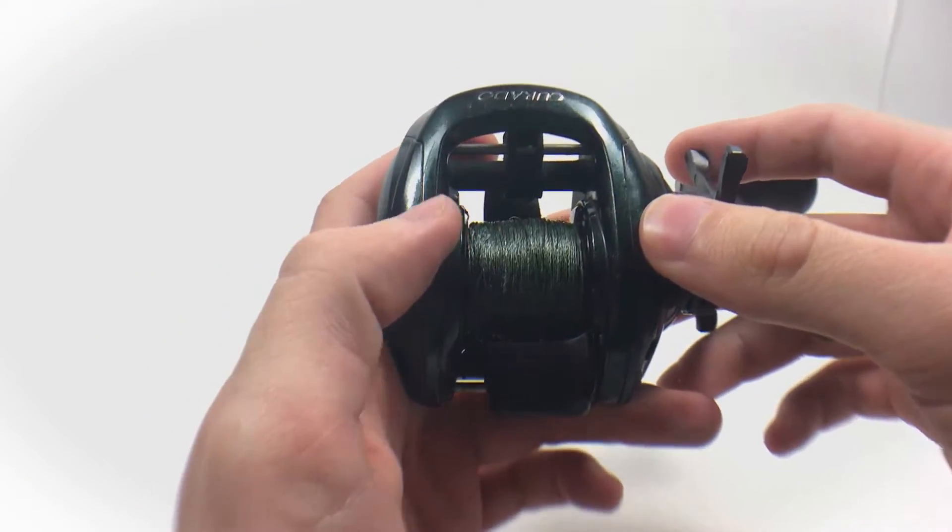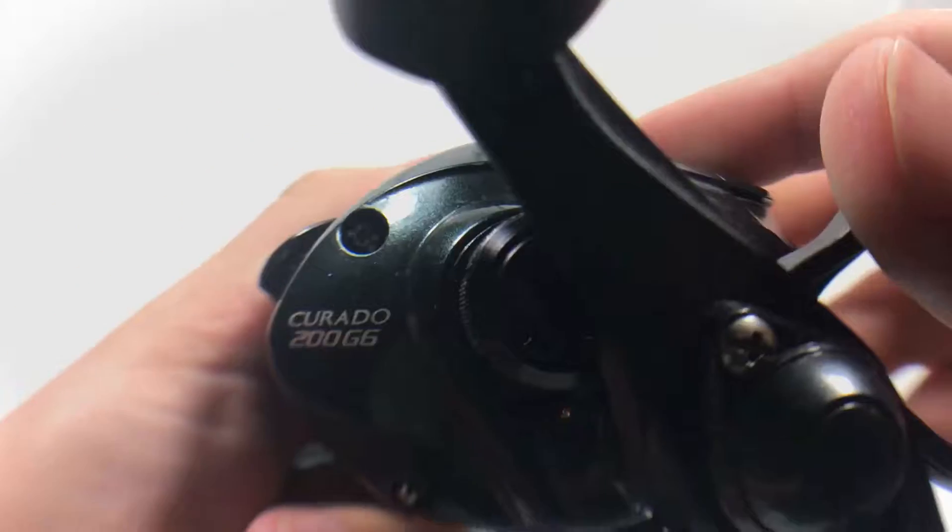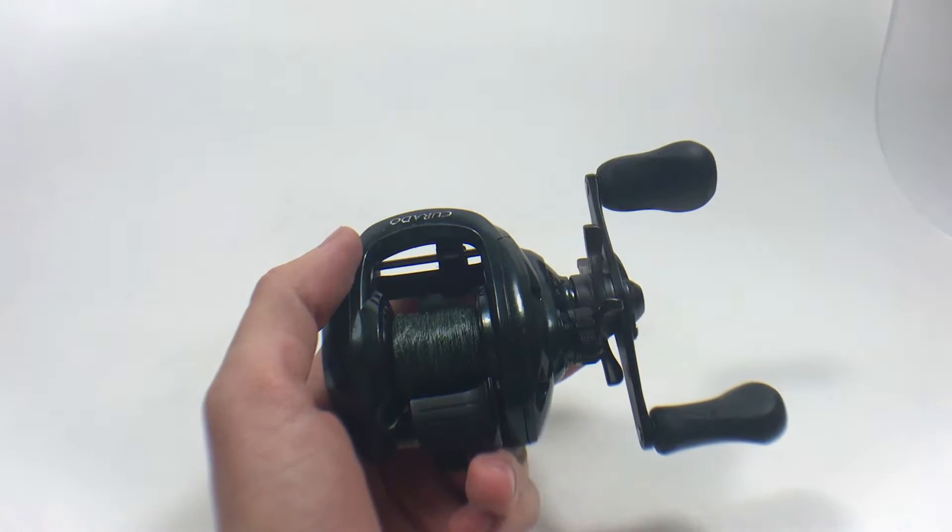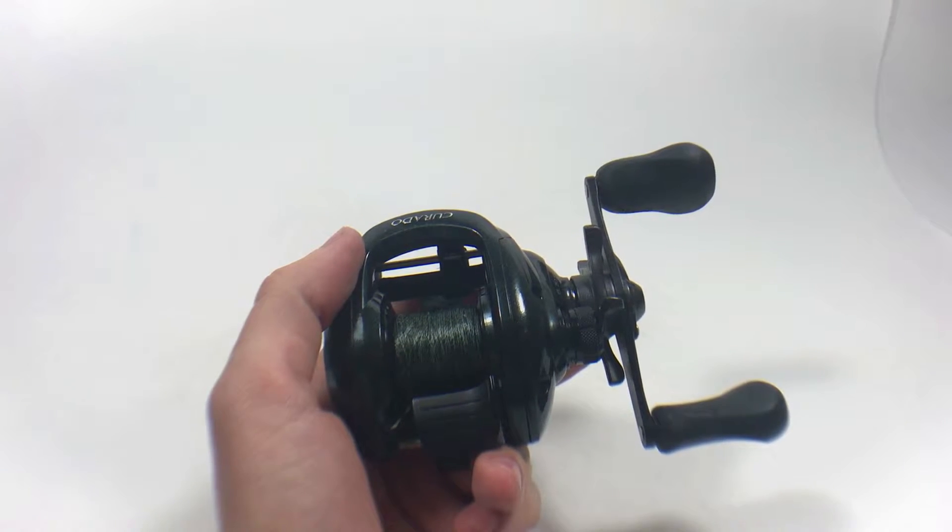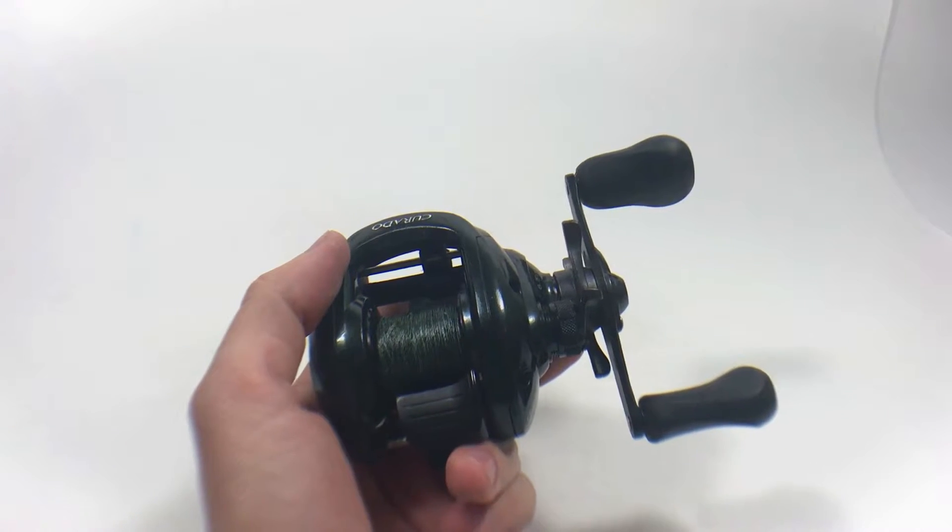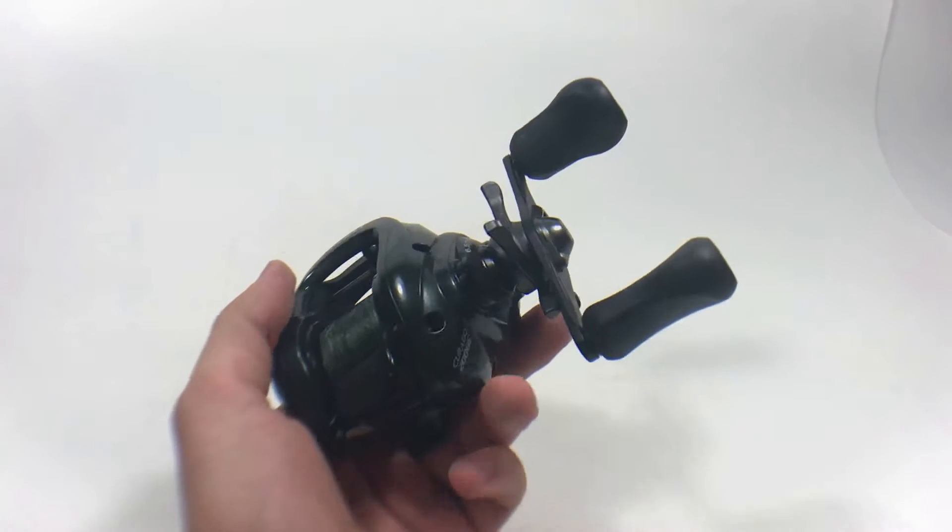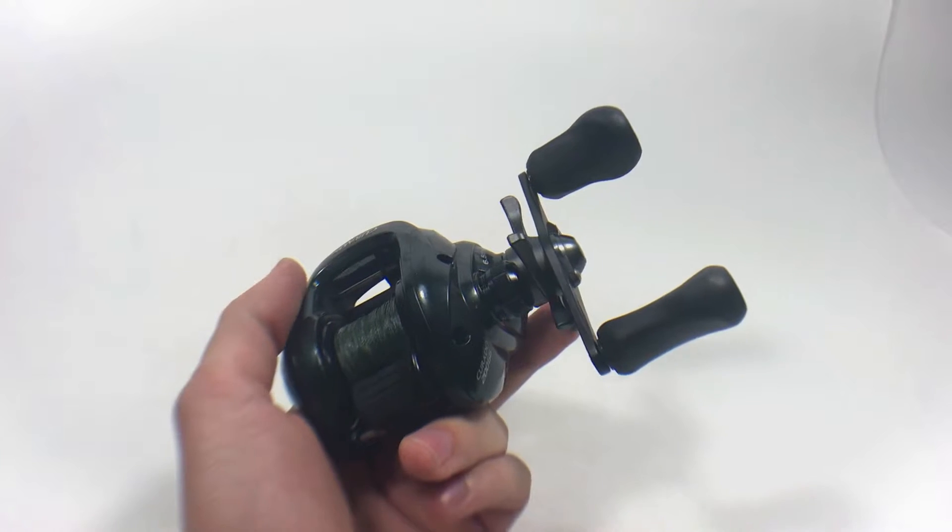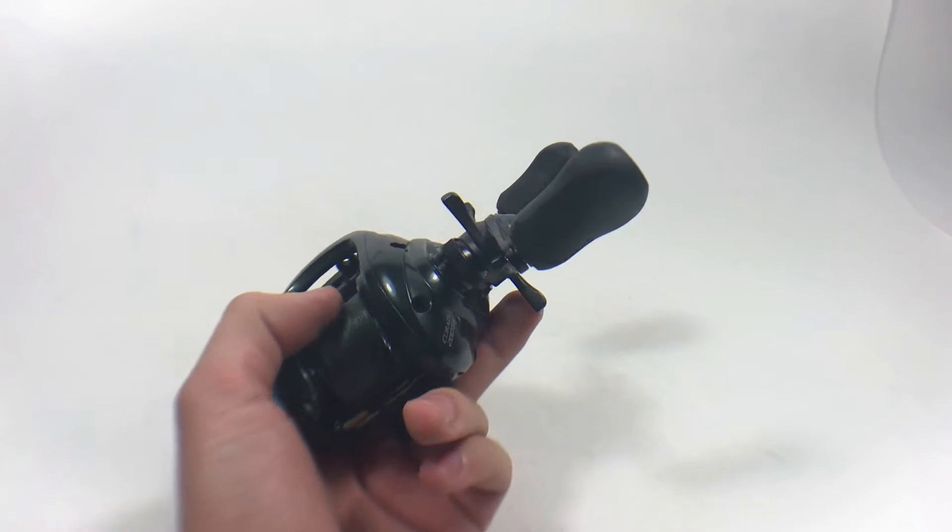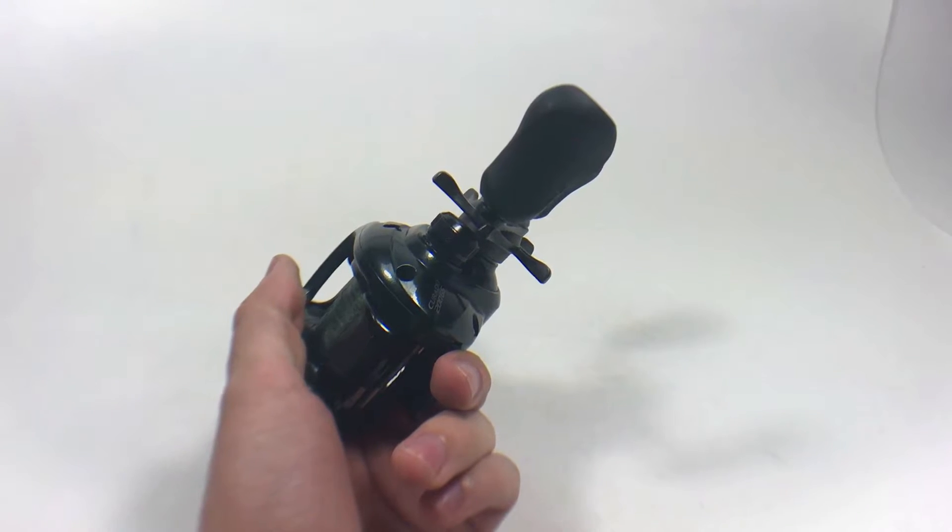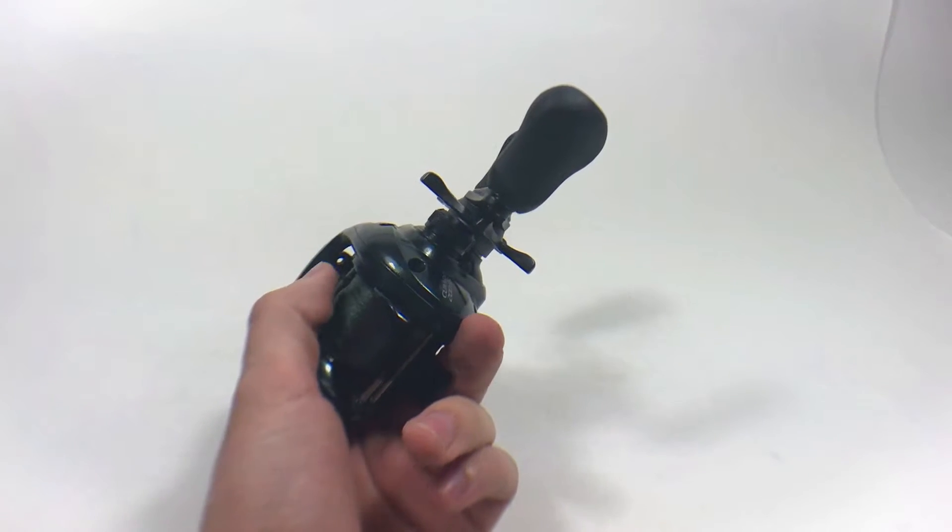Up next, we have the Curado 200 G6. This model, Curado, is the one that everyone hated. This is when everyone thought Shimano was going to fall off a cliff. And to be fair, it wasn't as good as the previous E models. But for myself, I managed to get about a good six years of use out of it. I could have gotten something better, but the reel didn't fail me. And at the time, when I was a young kid, that's all that mattered.